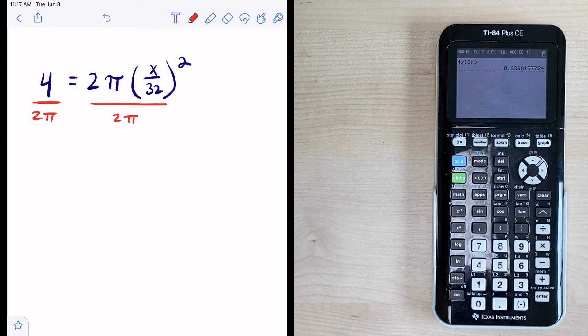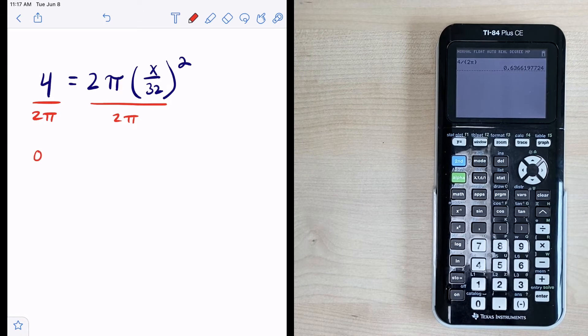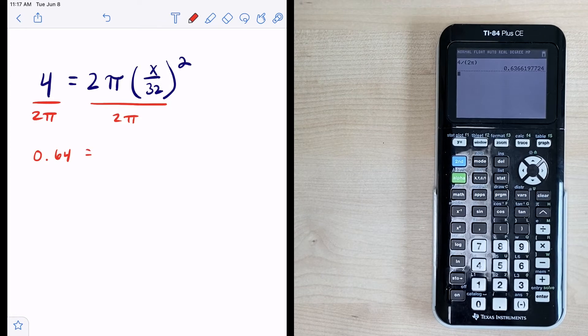Okay so on my work over here I'm going to say 0.64 is equal to x over 32 quantity squared.